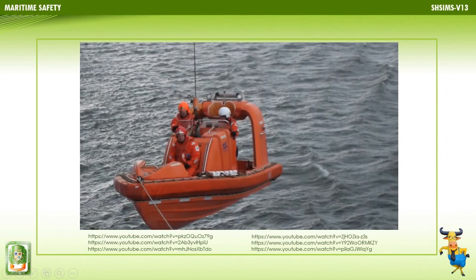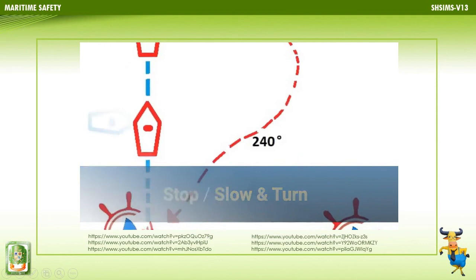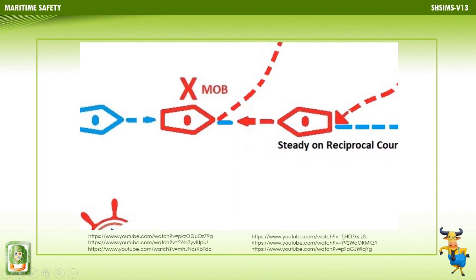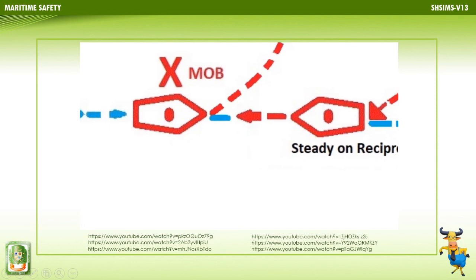This module describes three commonly used methods to turn a vessel back towards a man overboard: the Williamson turn, simple turn, and stop-slow-and-turn. The Williamson turn was developed primarily for large vessels whose turning circle was such that the man overboard would almost certainly be out of sight by the time the vessel had turned around.